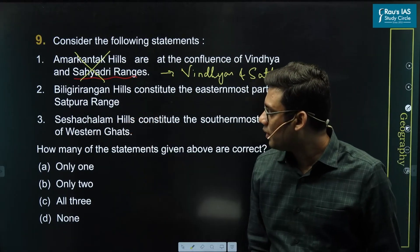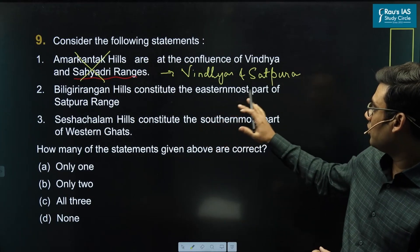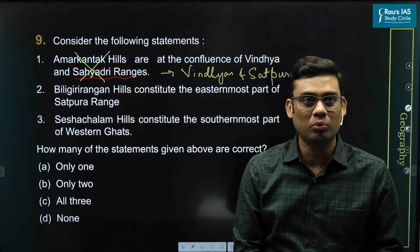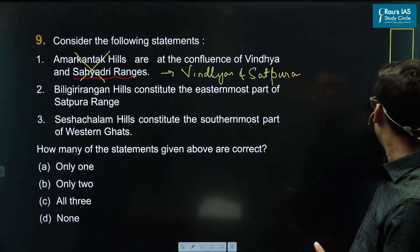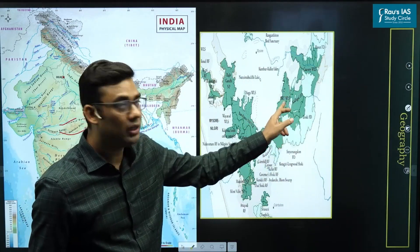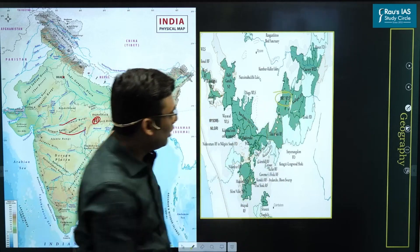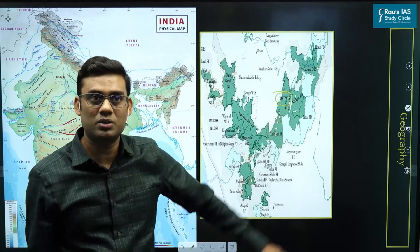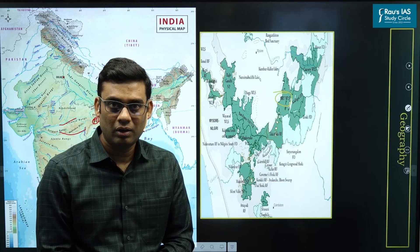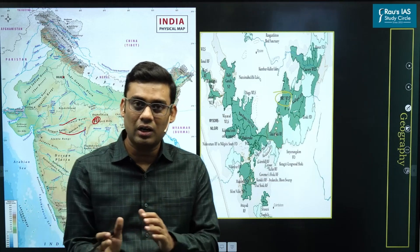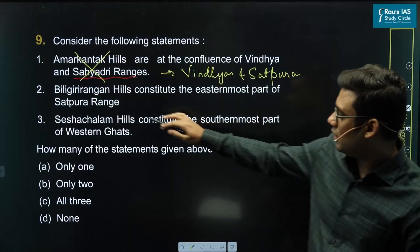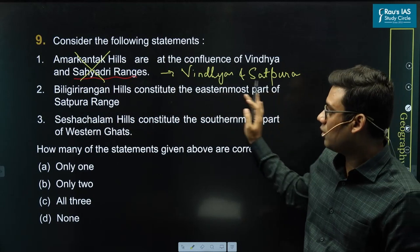The second statement says Biligiri Rangan hills constitute the easternmost part of the Satpuda range. These hills are also popularly called BR hills. Looking at the map, the BRT Wildlife Sanctuary marks the BR hills, and very clearly this is a part of the Nilgiris. The Nilgiris are at the confluence of the Western Ghats and Eastern Ghats. So the statement that BR hills constitute the easternmost part of Satpuda is incorrect.